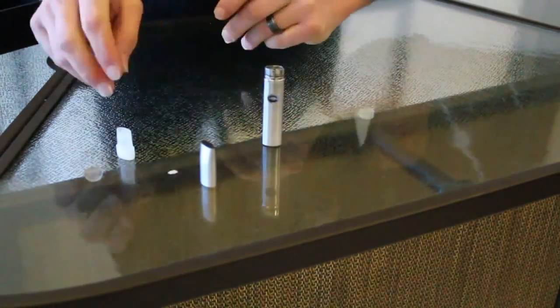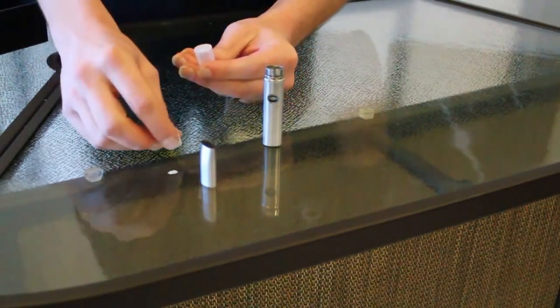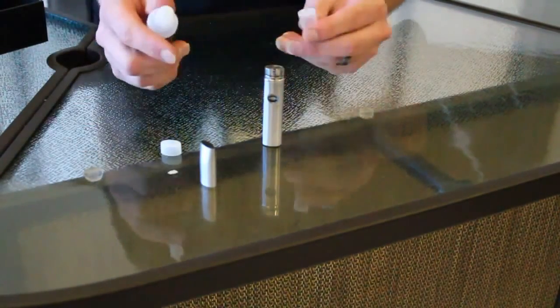Now that the atomizer's primed, we can go ahead and fill up our tank cartridge. The cap that comes with the tank cartridge is so you can pre-fill your tank cartridges and carry them around with you if you choose.